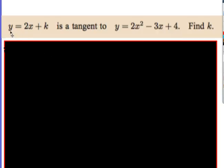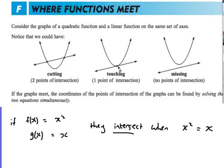Here we go. So y equals 2x plus k, and that is a tangent to y equals 2x squared minus 3x plus 4. Find k. Well, let's just go back here a sec. If it's a tangent, there's going to be one solution. So that's our case that we've got here.